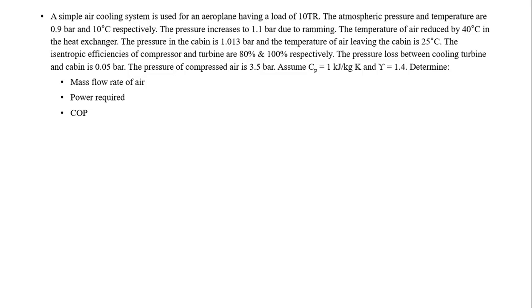In this video lecture we are going to solve numericals on aircraft air refrigeration cycle. A simple aeroplane system is used for an aeroplane having a cooling load of 10 TR. Atmospheric pressure and temperature are 0.9 bar and 10 degrees Celsius respectively. The pressure increases to 1.1 bar due to ram. The temperature of air is reduced by 40 degrees Celsius in the heat exchanger. The pressure in the cabin is 1.013 bar and the temperature of air leaving the cabin is 25 degrees Celsius. Isentropic efficiency for the compressor and turbine are 80% and 100% respectively. The pressure loss between cooling turbine and cabin is 0.05 bar and the pressure of compressed air is 3.5 bar. Cp is 1 kJ/kg·K and gamma is 1.4.